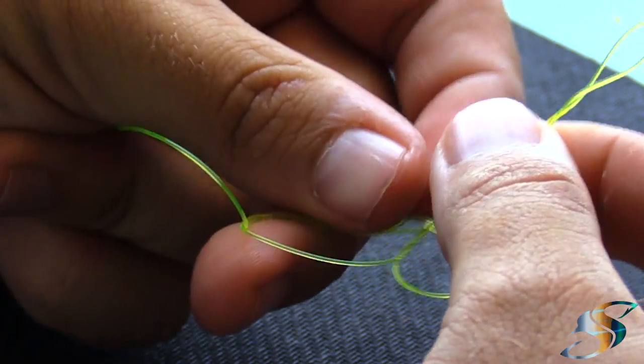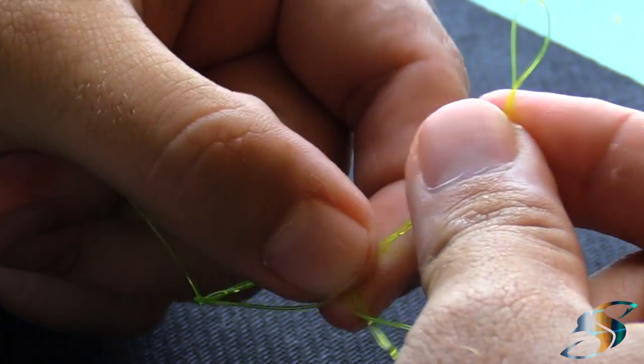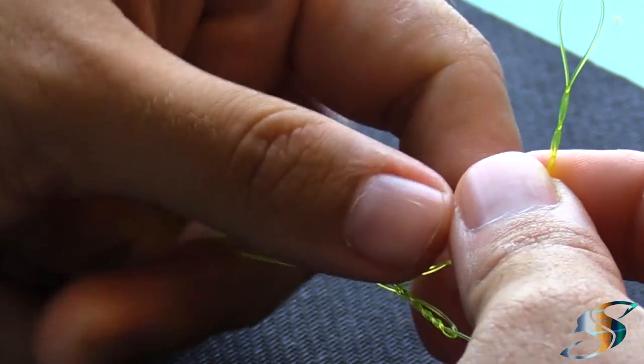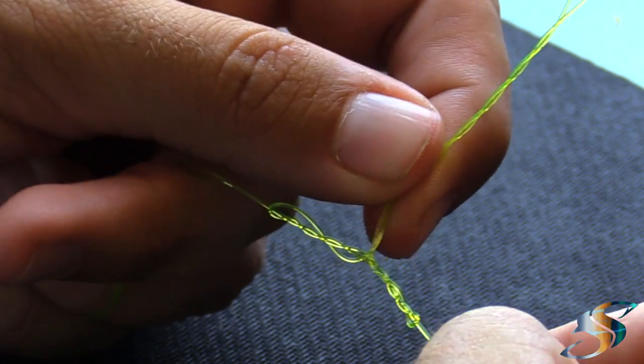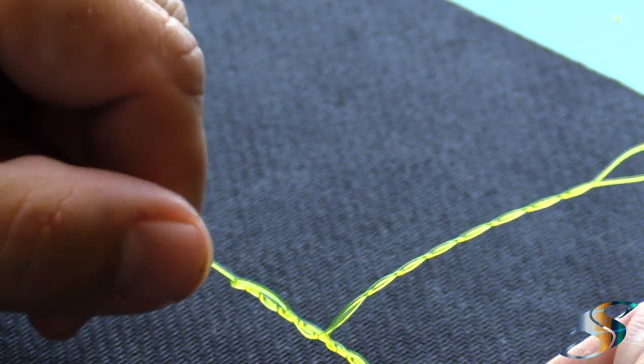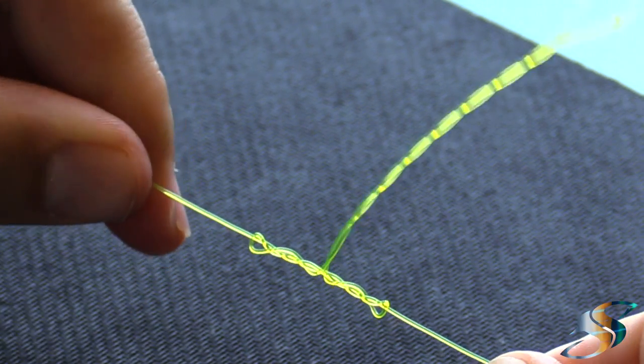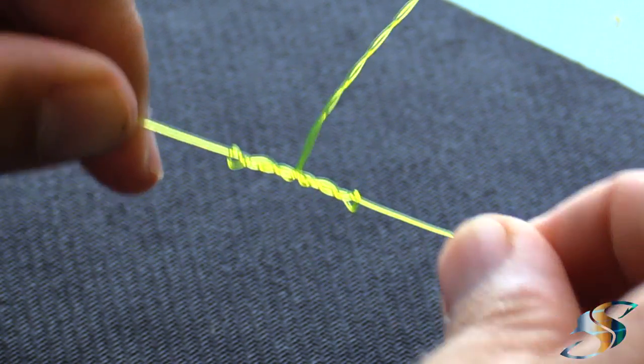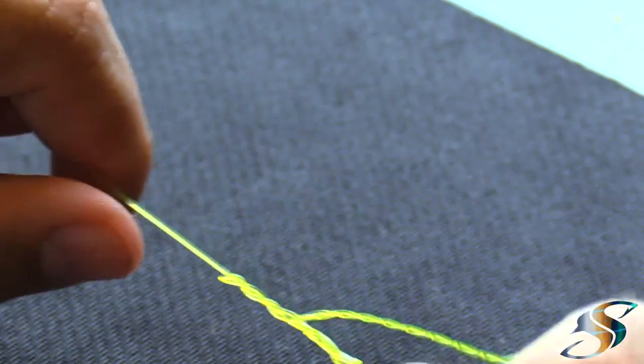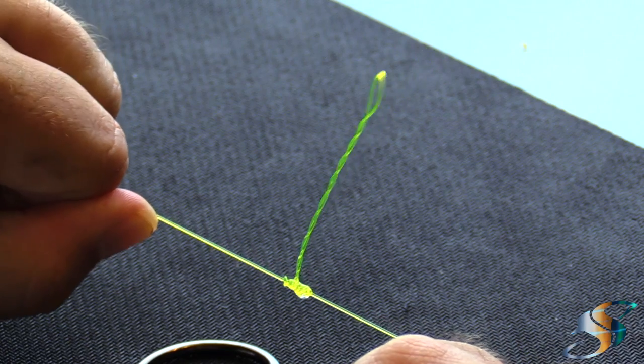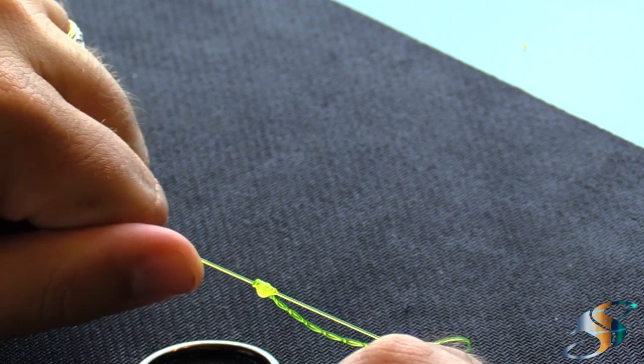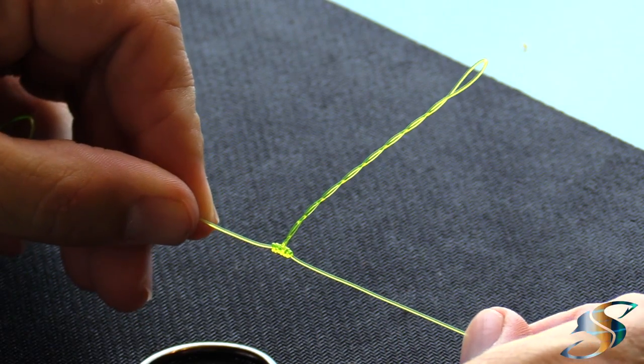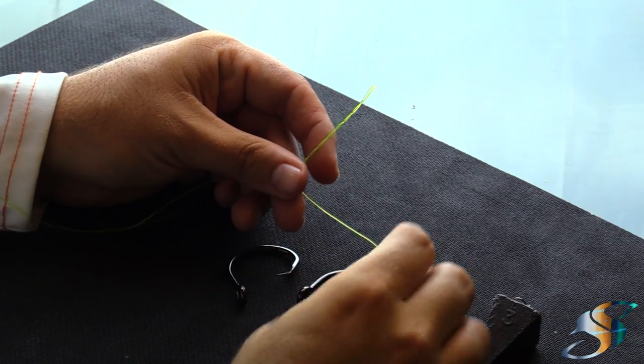Now I want to slowly go ahead and pull this all the way through while keeping tension on both ends—both my tag end and my main line on this side. You can see how this is coming together very nicely already. I'm going to use a little saliva and pull this thing tight. Now you just want to cinch it down nice and tight, and it should look just like that.